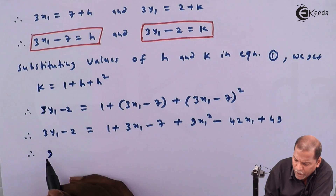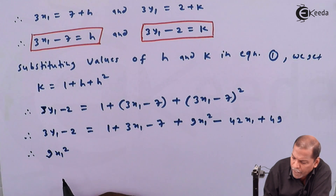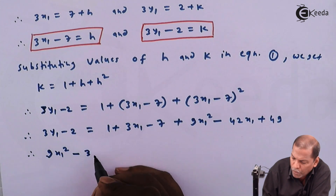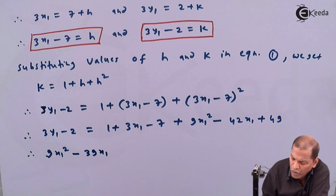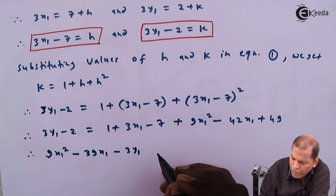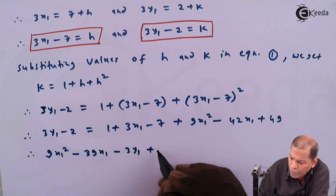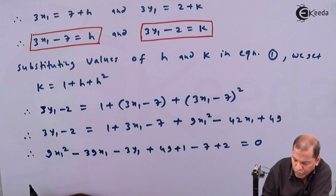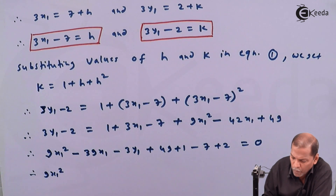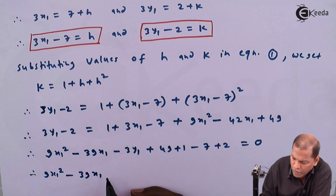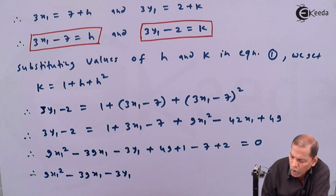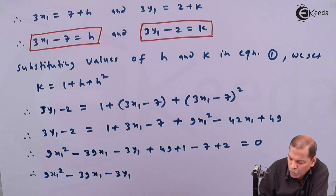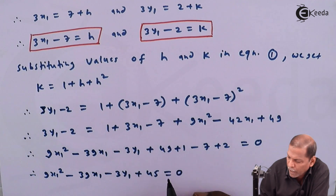Expanding (3x1 - 7)² gives 9x1² - 42x1 + 49. So the next step becomes: 9x1² + 3x1 - 42x1 - 39x1 - 3y1 + 49 + 1 - 7 + 2 = 0. Simplifying: 9x1² - 39x1 - 3y1 + 50 - 7 + 2 = 0, which gives 9x1² - 39x1 - 3y1 + 45 = 0.